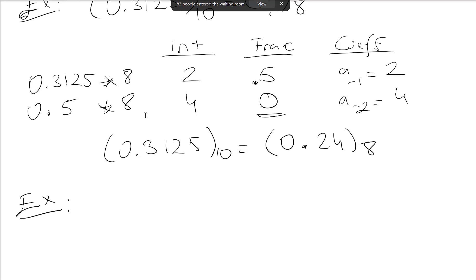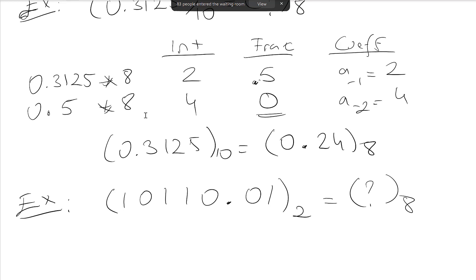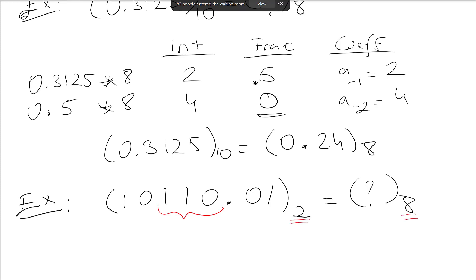Now let's convert binary to octal. Given 101100.01 in base 2: we group bits in 3 because we're converting to octal. The rightmost integer group 110 is 6. The remaining 2 bits become 010 by padding a leading zero, which is 2. For the fractional part, 01 becomes 010 by padding a trailing zero, which is 2. So the representation in octal is 26.2.